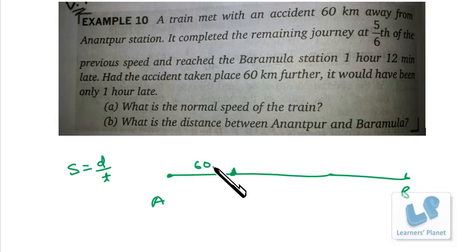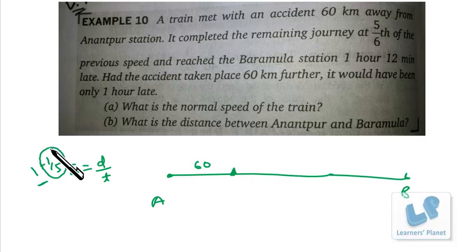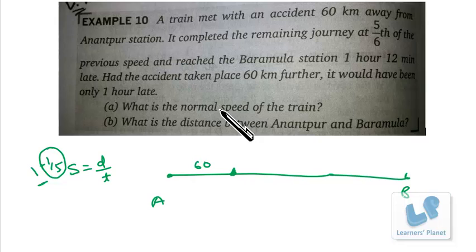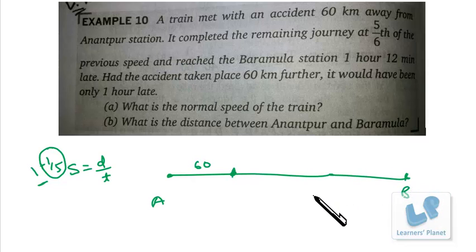So 6/5 means 1 plus 1/5 — the '1' is normal time and 1/5 is extra. This extra 1/5 equals 1 hour 12 minutes, which is 72 minutes. If 1/5 is 72 minutes, then 1 (the whole) is 360 minutes, which is 6 hours. So from the accident point to Baramula, the normal time is 360 minutes or 6 hours.